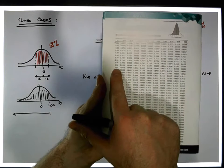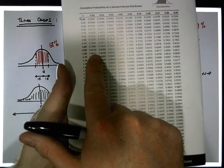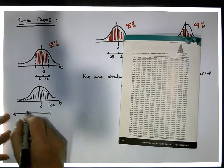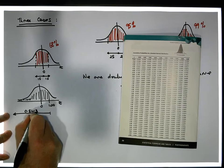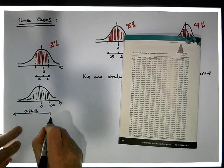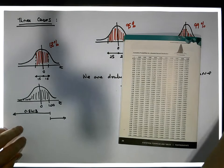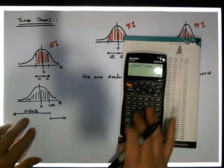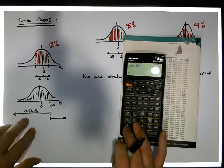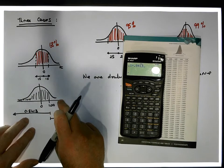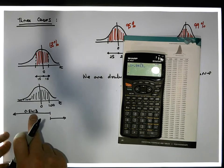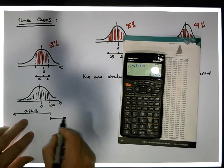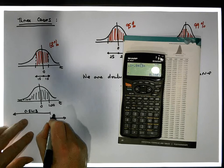At z = 1.00 we have 0.8413. So the area to the left is 0.8413, which means that the area in the right-hand tail must be 1 minus 0.8413. Don't forget, the total area under the curve is 1. The area from here across is 0.8413, which means the area in the right-hand tail must be 1 minus 0.8413. That gives us a value of 0.1587 in the right-hand tail.